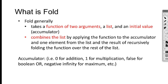What is fold? Fold generally takes a function of two arguments, a list, and an initial value, also called accumulator. It combines the list by applying the function to the accumulator and one element from the list, and the result of recursively folding this function over the rest of the list. Usually, the accumulator for addition is zero, for multiplication is one, and for maximum or minimum it will be negative infinity or positive infinity.